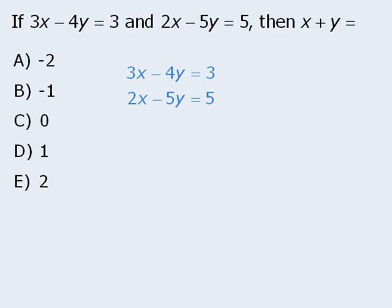Now notice what happens when we subtract the bottom equation from the top equation. 3x minus 2x equals x. Next, negative 4y minus negative 5y equals positive or plus 1y. And finally, 3 minus 5 equals negative 2. Since we can see that x plus y equals negative 2, the answer here must be A.